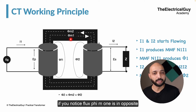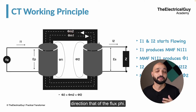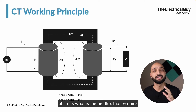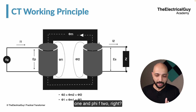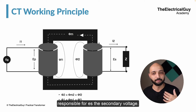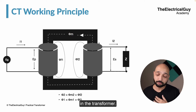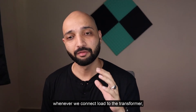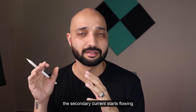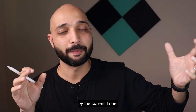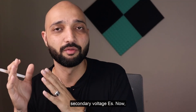If you notice, flux phiM1 is in the opposite direction to flux phiM2. So the resultant flux in the transformer will be the subtraction of these two, and the net flux is given by phiM. PhiM is the net flux that remains after you subtract phiM1 and phiM2. This flux is important because the secondary voltage ES depends upon this. So what you have to remember is that whenever we connect a load to the transformer, the secondary current starts flowing and produces its own flux, which will oppose the flux produced by current I1 — and the resultant flux is phiM, which is responsible for the secondary voltage ES.